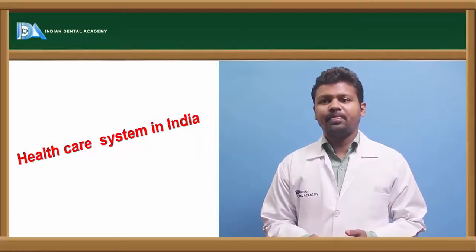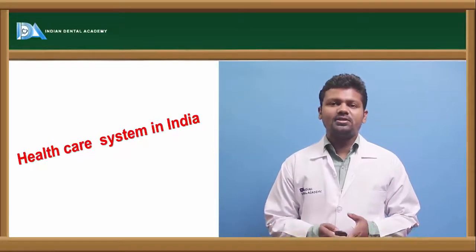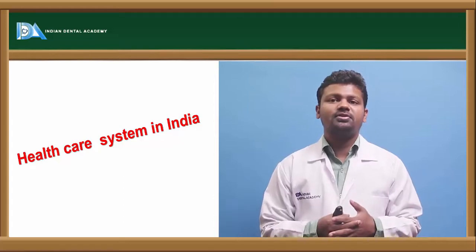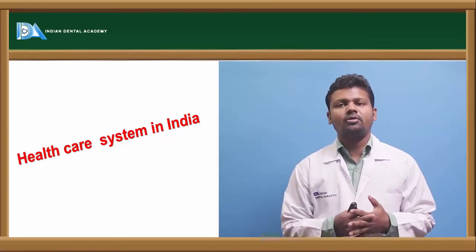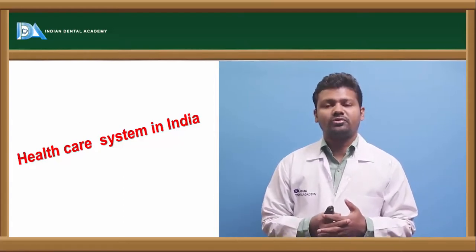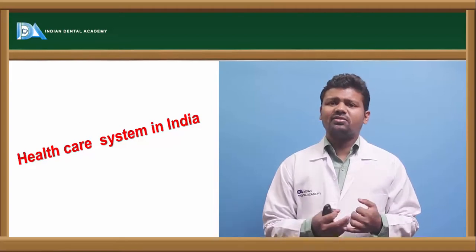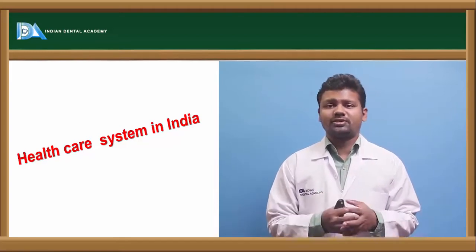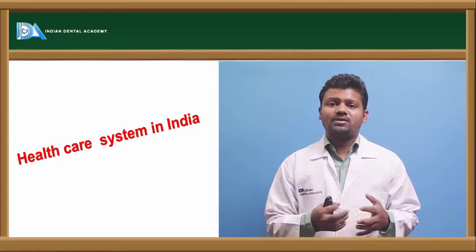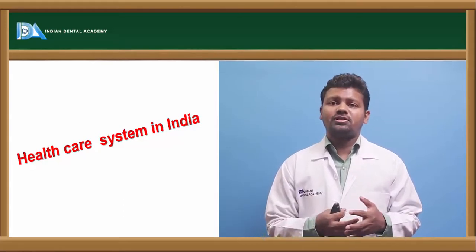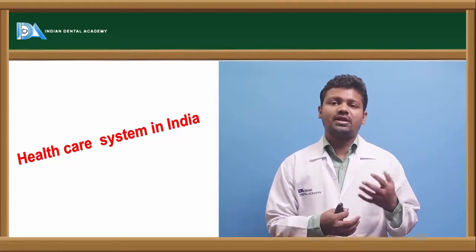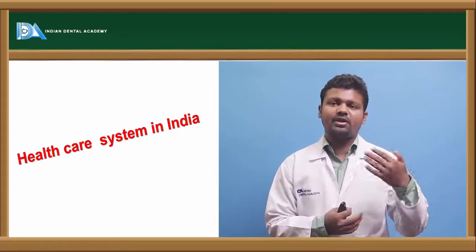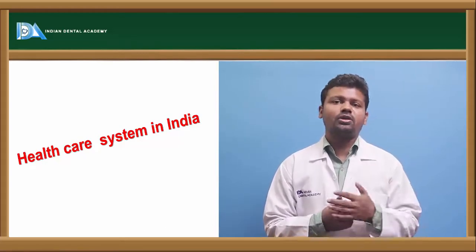The healthcare system in India. Health is defined as a state of complete physical, mental and social well-being and not merely an absence of disease. It comprises three factors: it should be physically, mentally and socially acceptable. The biomedical concept and ecological concept all see that health should lie in a special spectrum, in a continuum without a cut-off point.